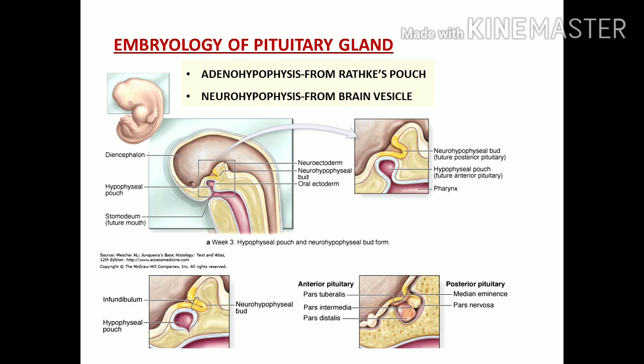Let us learn the embryology or developmental anatomy of the pituitary gland. Developmentally, both the anterior and posterior pituitary glands are separate entities. The anterior pituitary, or adenohypophysis, is developed from the epithelium of the pharyngeal roof, which causes an outpocketing called Rathke's pouch or the hypophysial pouch. During further proliferation, this pouch detaches from the oropharyngeal region and proliferates into the anterior pituitary gland.